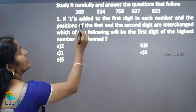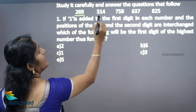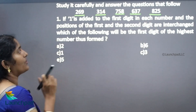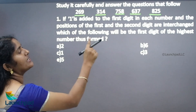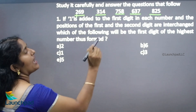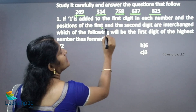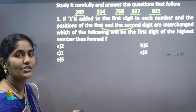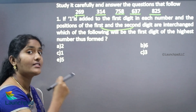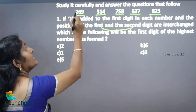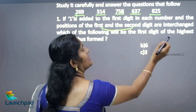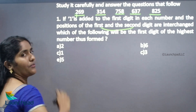In this question there are 5 sets of numbers: 269, 314, 758, 637, and 825. If one is added to the first digit in each number, and then the position of the first and second digit are interchanged — first we need to add one to the first digit, and after that we want to interchange the first digit and second digit. Which of the following will be the first digit of the highest number thus formed?